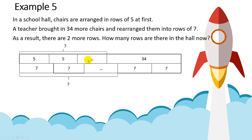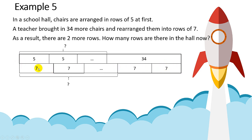To repeat: at the start, each row has five chairs. The teacher brought in 34 more chairs, so over here extend by 34. Now the total chairs are being rearranged into rows of seven.